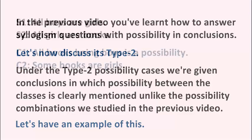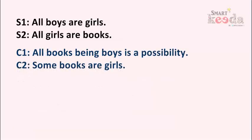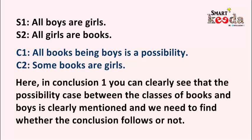Let's have an example of this. In this example, two statements and two conclusions are given. Statement 1 is: all boys are girls. Statement 2 is: all girls are books. Conclusion 1 is: all books being boys is a possibility. And conclusion 2 is: some books are girls. In conclusion 1, you can clearly see that the possibility case between the classes of books and boys is clearly mentioned, and we need to find whether the conclusion follows or not.